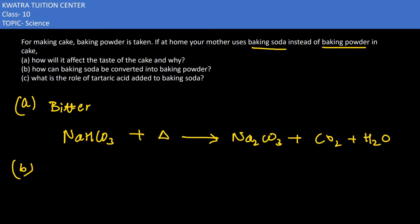In part B, we have said that baking soda is also converted into baking powder. Now what do we add in this? We have to add tartaric acid in it. So what will be the bitterness? It will be removed.